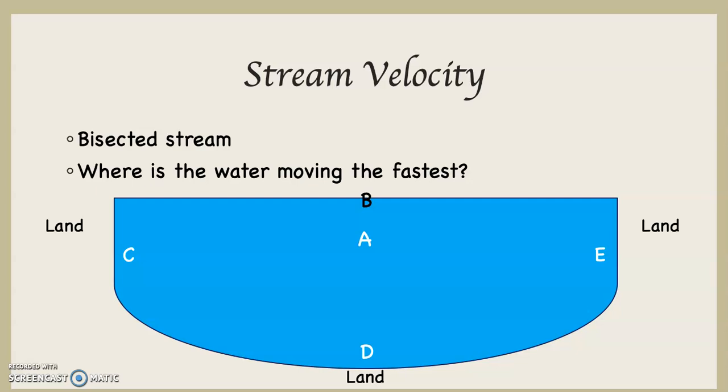Where is the water moving fastest? Position A, position B, position C, position D, or position E?